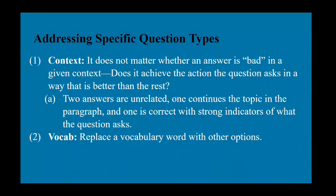There are a few different question types on this section. One important one is context. The ACT isn't always testing what is correct and what isn't, but rather what is the best choice. There may be multiple good answers but only one that is best, or all answer choices may be bad but one is still better than the rest. Try to find which one best answers the question.